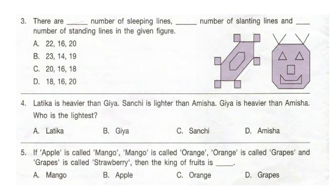Question 3: There are dash number of sleeping lines, dash number of slanting lines, and dash number of standing lines in the given figure. You can pause the video and count the number of lines if you want. The correct answer is option C. Question 4: Latika is heavier than Amisha. Who is the lightest? The correct answer is option C, Saatchi.